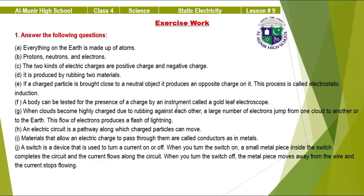Part F: a body can be tested for the presence of a charge by an instrument called a gold leaf electroscope. Part G: when clouds become highly charged due to rubbing against each other, a large number of electrons jump from one cloud to another or to the earth — this flow of electrons produces a flash of lightning. Part H: an electric circuit is a pathway along which charged particles can move. Part I: materials that allow an electric charge to pass through them are called conductors, as in metals. Part J: a switch is used to turn a current on or off — when turned on, a small piece completes the circuit; when turned off, the metal piece moves away and current stops flowing.